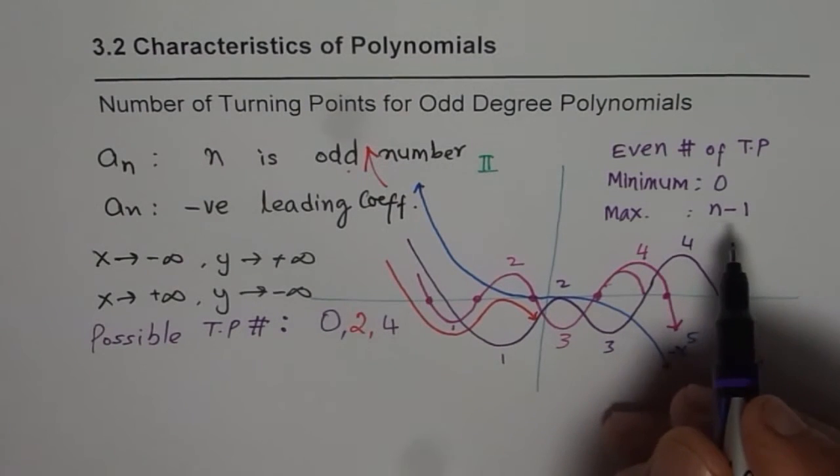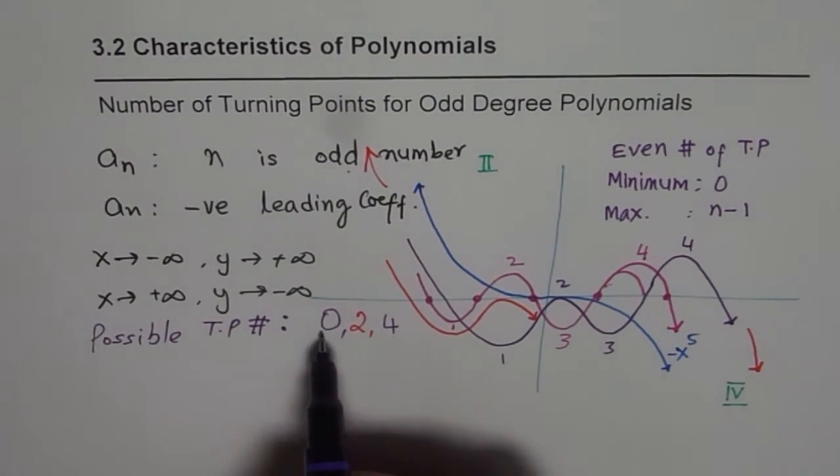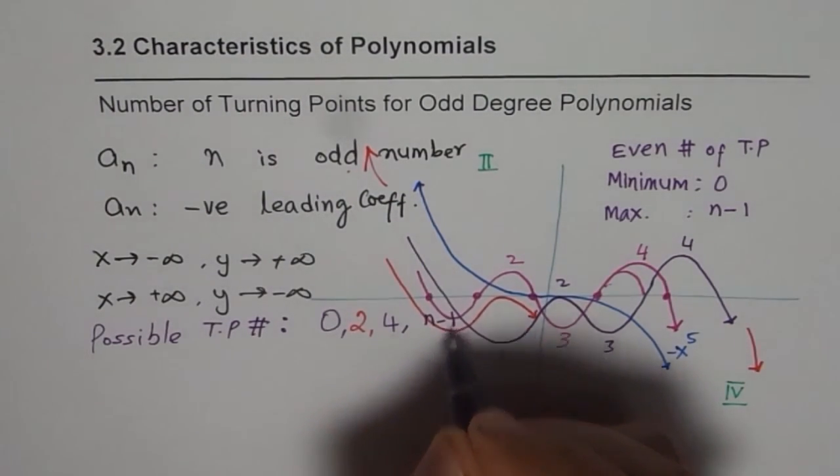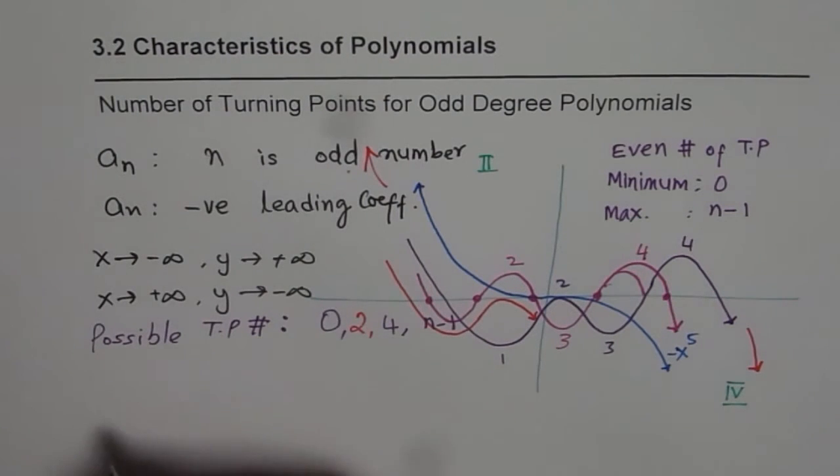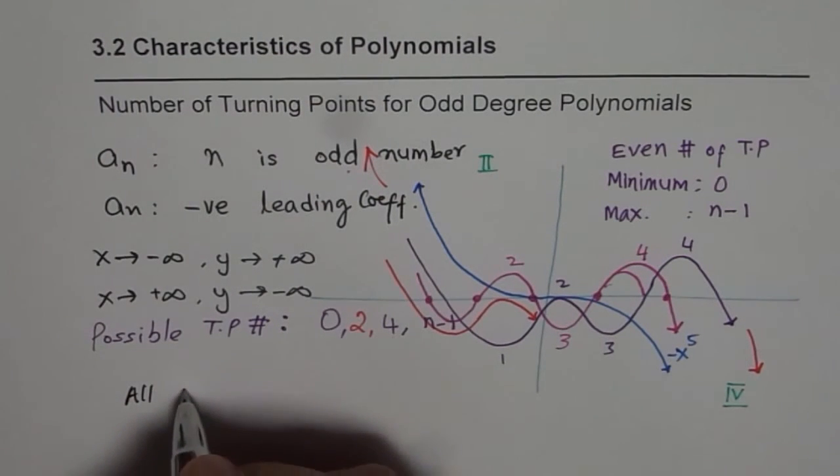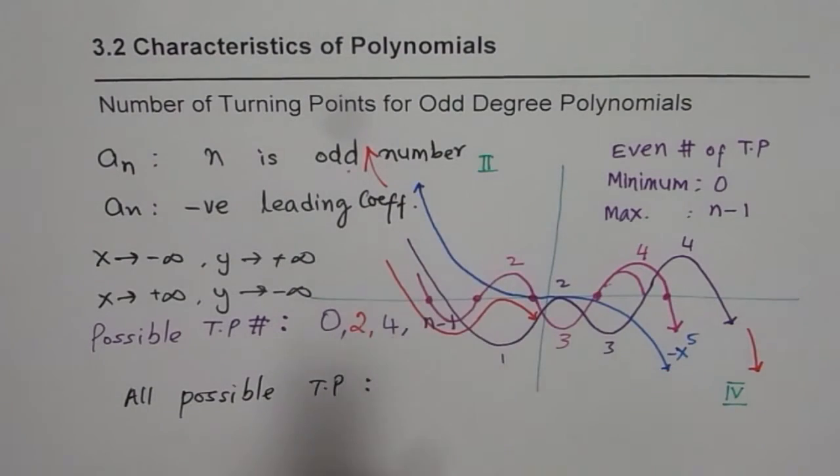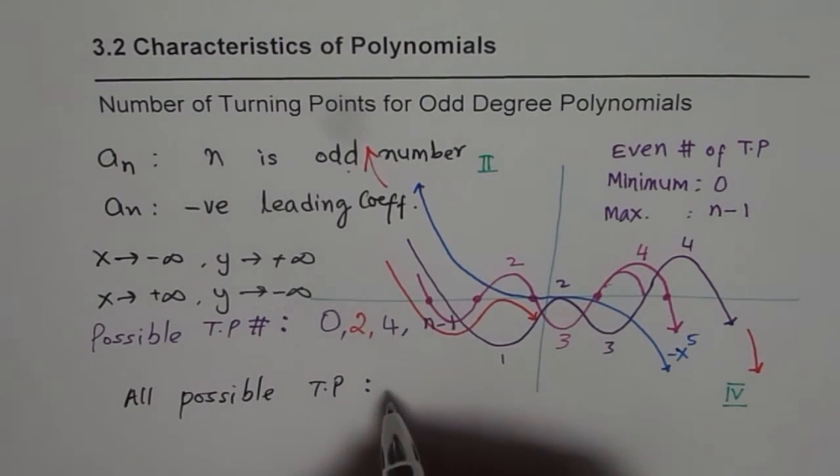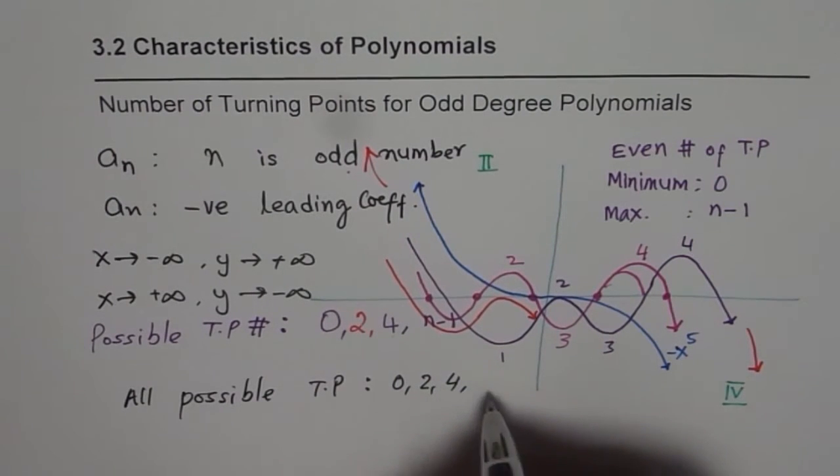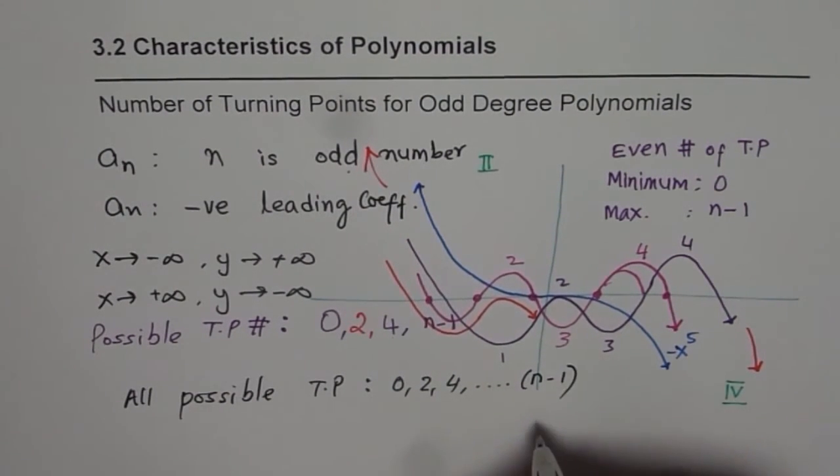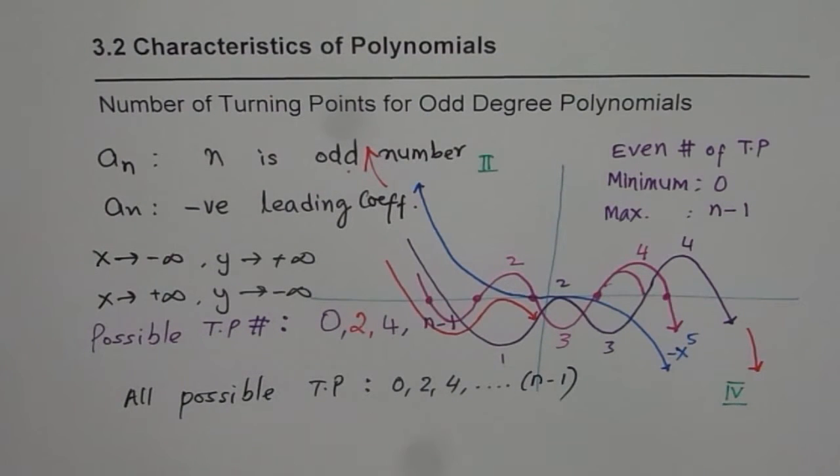So the possible number of turning points will be zero, two, four, till n minus one. So let me write down our final statement. All possible turning points, this is about odd degree polynomial, of degree n is zero, two, four, like this, till n minus one. That is what we conclude. And remember always, odd degree polynomial cannot have odd number of turning points. It cannot turn once or thrice. It will turn even number of times from zero to n minus one. I hope that's absolutely clear. Thank you and all the best.